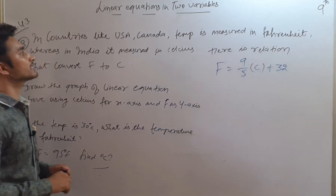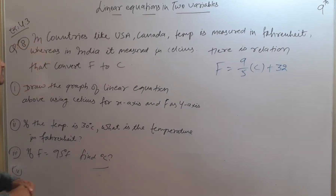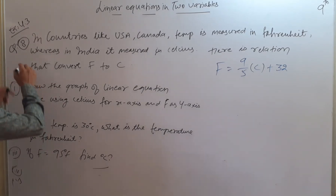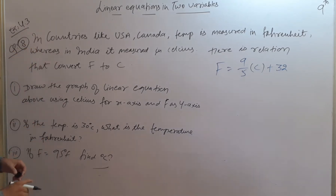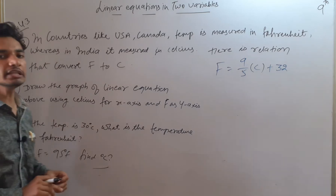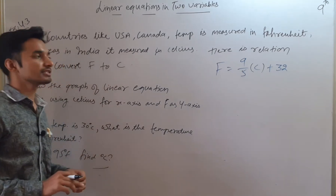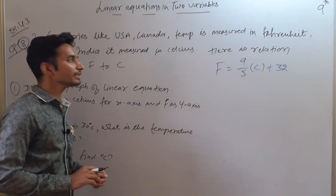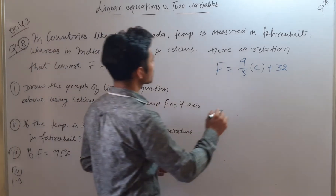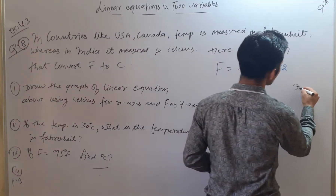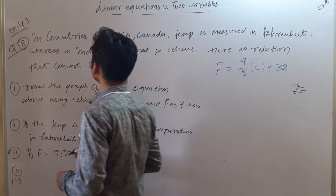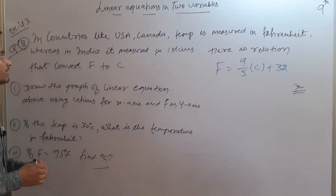Today we are covering linear equations in two variables. In the earlier session we completed question number 7. Today we are starting with question number 8, which involves a relation between Fahrenheit and Celsius — the two units defined for measuring temperature.